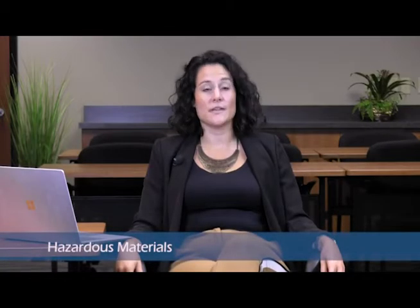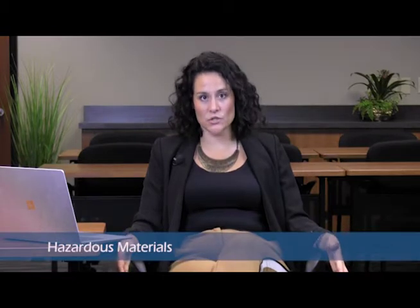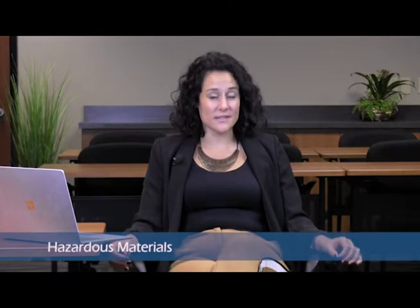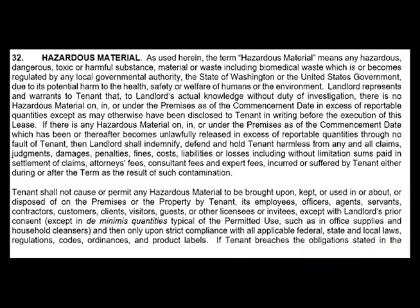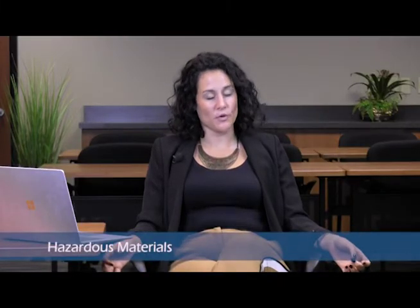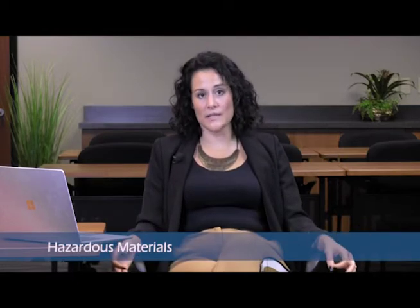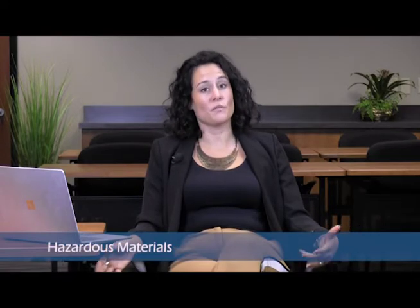The next important change to be mindful of is in the hazardous materials clause. What we've done is we've tempered landlord's representation and warranty and tenant's obligations with regard to existence of hazardous materials on the premises. The language of this clause now contemplates regulatory thresholds of hazardous materials. With respect to landlord's representation and warranty that there are no hazardous materials on the premises, we've tempered this so that the representation and warranty is of landlord's actual knowledge of hazardous materials that are in excess of reportable quantities. Moving down the clause to tenant's obligations, the clause now contemplates that tenant is not to bring hazardous materials onto the premises except in de minimis quantities that are typical of the permitted use — things like household cleaners or office supplies that may contain hazardous materials, so we're not putting tenant in breach of the lease for having those within their premises.